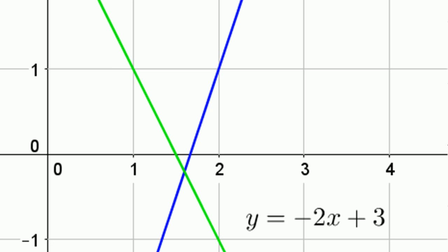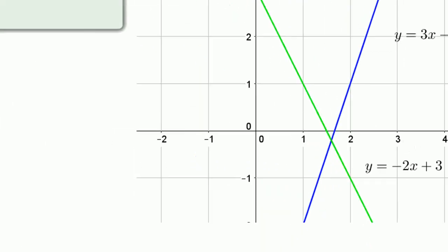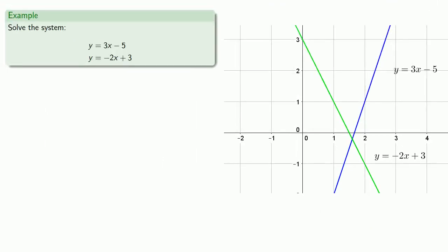And this is the problem with trying to solve equations by graphing. We have to be able to read the coordinates of an intersection point with unlimited accuracy. But in general, we can't do that. So what we really want is an algebraic method of finding these intersection points, an algebraic method of solving systems of equations. We'll take a look at that next.